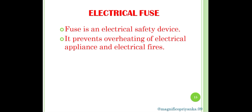How does a fuse work? It contains a wire made of metals like aluminum and copper, which have a low melting point. When excess current flows through the circuit, the metal wire melts. Thus, by breaking the circuit, it prevents overheating of electric appliances.